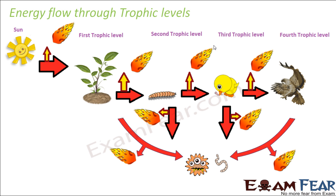Here, the sun is the ultimate source of energy. From the sun, the energy is utilized by the plants, which form the first trophic level — that is, the producers. Plants are the producers. They are going to use around 1% of energy from sunlight, which actually gets converted into food. Some amount of energy is lost in the form of heat.